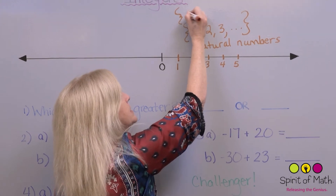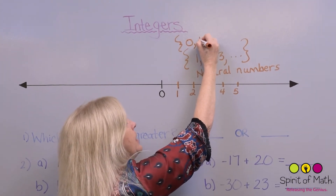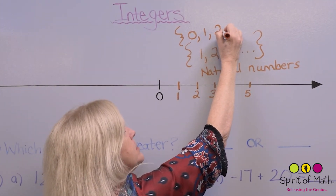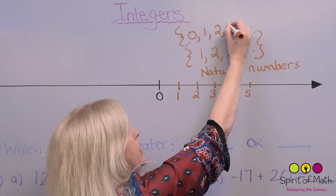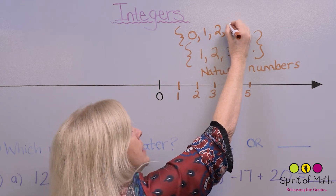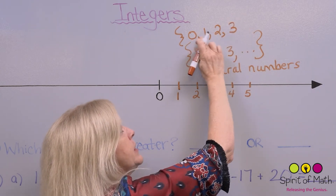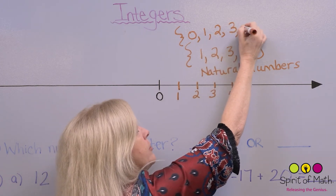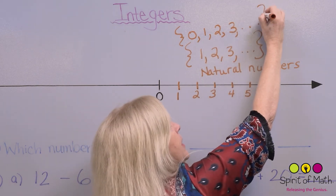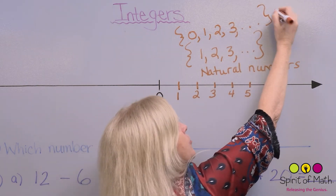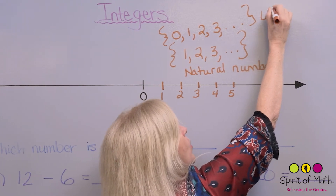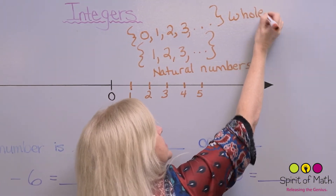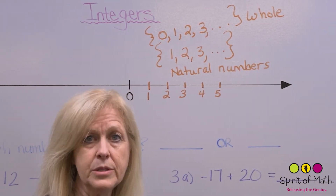So that's when they came up with a different number set — the whole number set. The whole number set consists of zero plus all the natural numbers: zero, one, two, three, and so on. This would be called the whole number set.